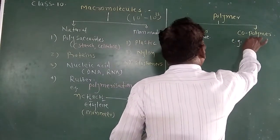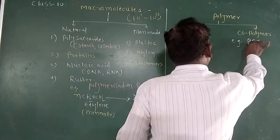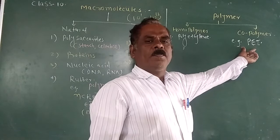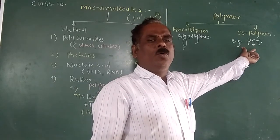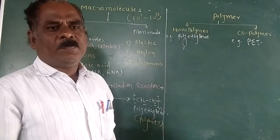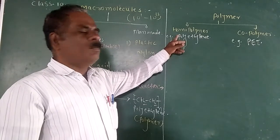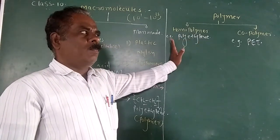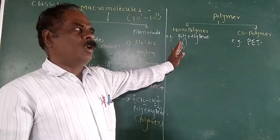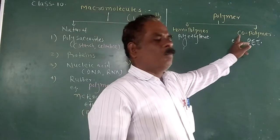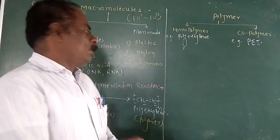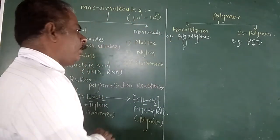An example of a copolymer is a compound formed from more than two monomers. To summarize: polymeric compounds formed from a single monomeric unit are called homopolymers, and polymeric compounds formed from two or more monomeric units are called copolymers.